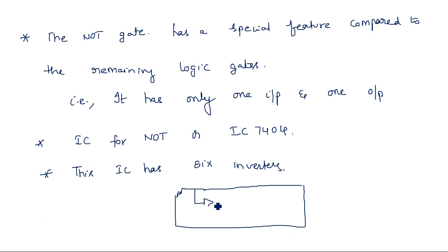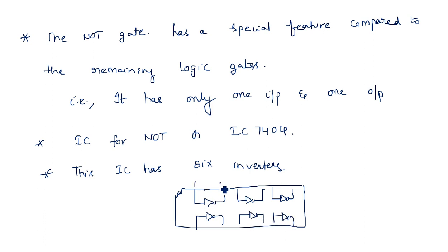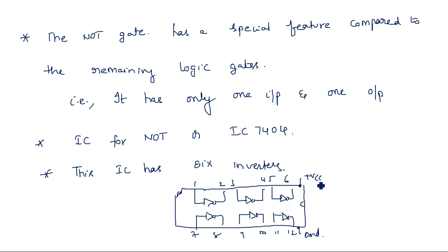That IC has 3 pins on one side and 3 more on the other side, giving 12 pins in total — pins 1 through 12. Along with these 12 pins, we also have VCC (plus 5V) and ground. Every integrated circuit has a power supply and ground because we need these two for any circuit to operate. So IC 7404 has 6 inverters arranged in this way.